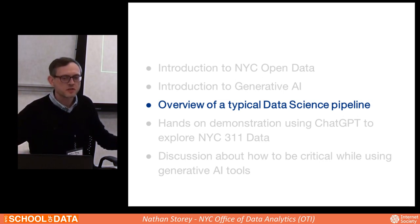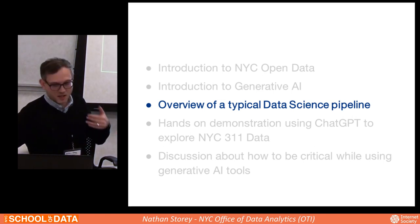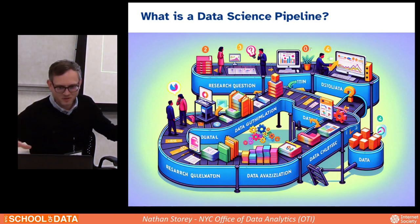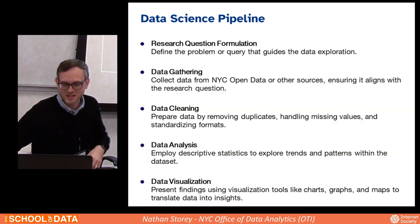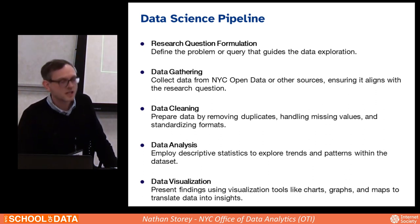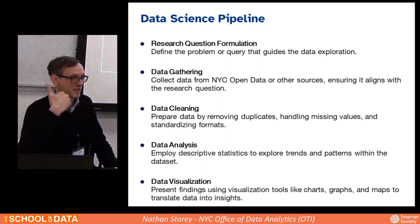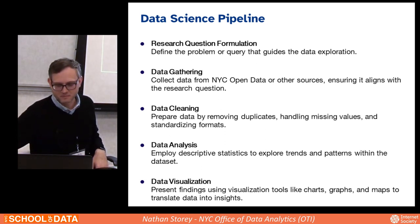I want to briefly overview what I mean by a data science pipeline, then get into how we can use ChatGPT to learn about and actually do data science pipelines within a chat interface. A data science pipeline looks something like this: first there's research question formulation, then we gather data to answer that question. We do data cleaning — removing duplicates, handling missing values, standardizing formats. Then data analysis, exploring trends and patterns. And finally visualization, like charts, graphs, and maps to translate data into insights or actionable information.